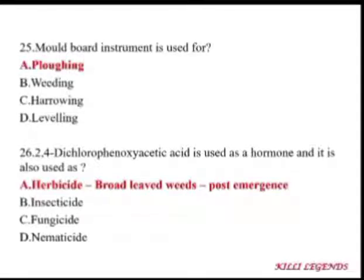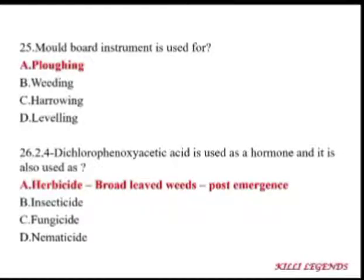2,4-Dichlorophenoxyacetic acid (2,4-D) is used as a growth regulator hormone. In larger quantities it can be used as a herbicide. 2,4-D is the first herbicide, and it is a post-emergence herbicide for broad-leaved weeds.